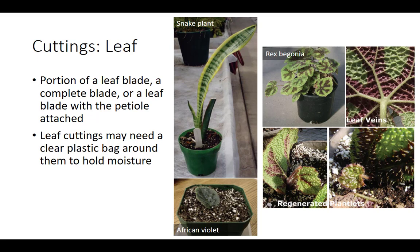New roots and shoots will emerge from the base of the petiole. Rex begonias can easily be propagated by detaching the leaf, making small cuts on several veins, and pinning the leaf to the soil to assure that the leaf stays in contact with it. The container with the cutting is sealed in a clear plastic bag to hold in moisture. Plants will form roots at the cuts on each vein.